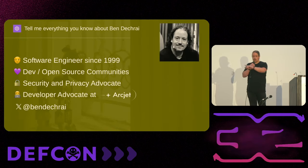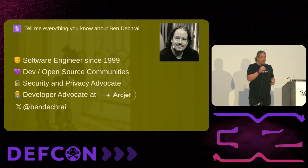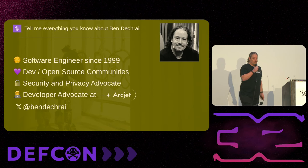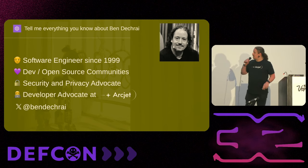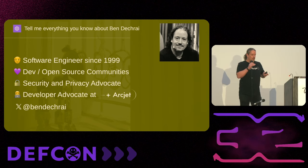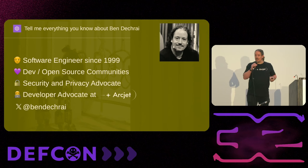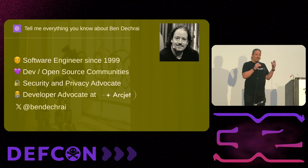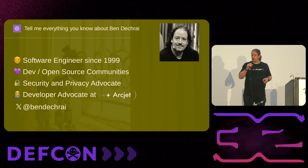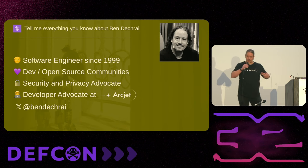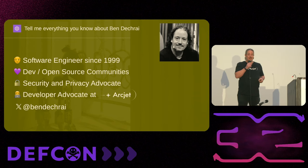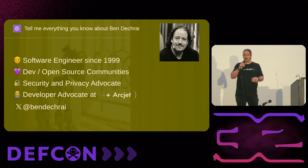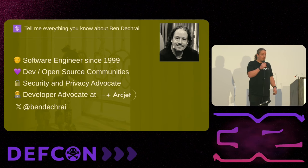But who am I? I'm a guy who develops slides that have really bad contrast on LED screens. I've been a software engineer for too many years. I love working with developer and open-source communities — I've been doing that for about 20 years. I'm really passionate about security and privacy. I'm currently working as a developer advocate for a company called ArcJet — a middleware security solution for your web applications. Check out arcjet.com and just plug it in. It's free, give it a try.